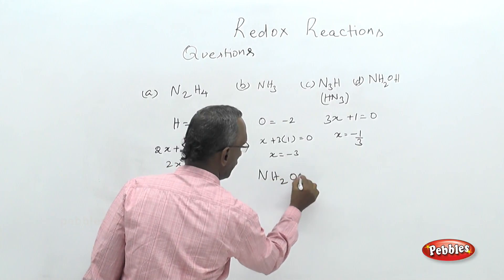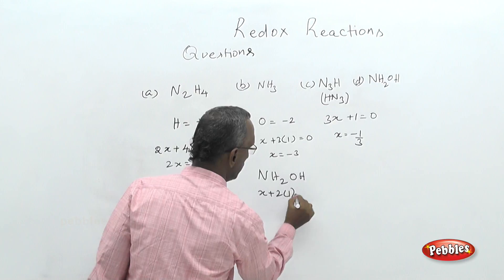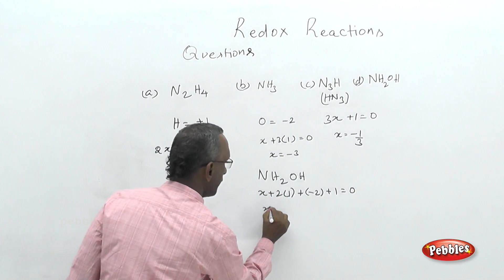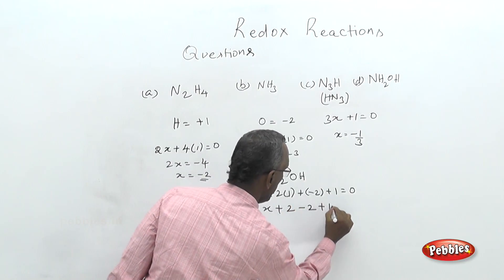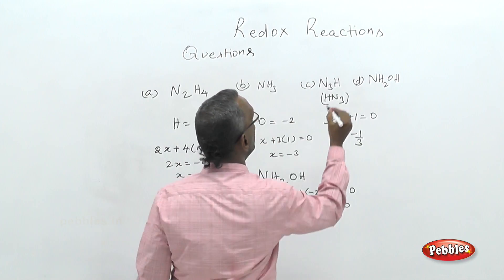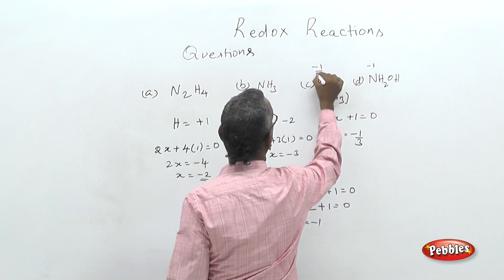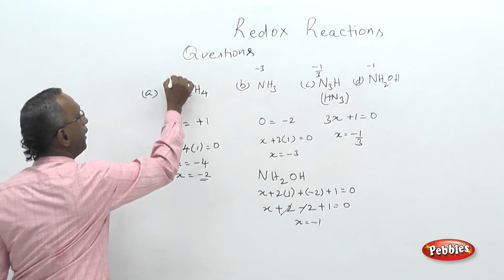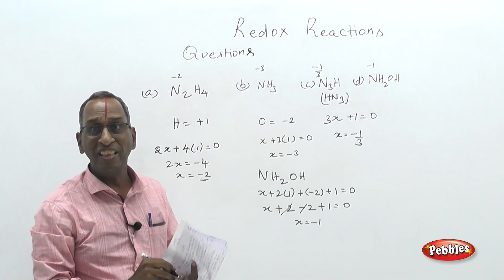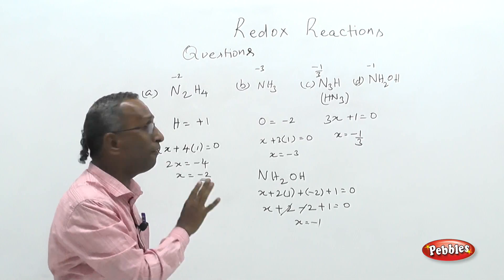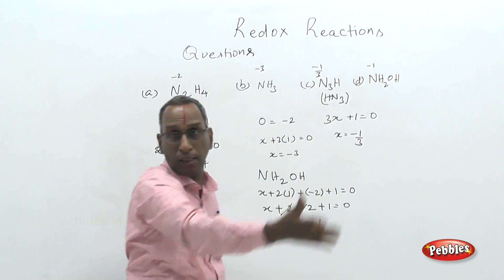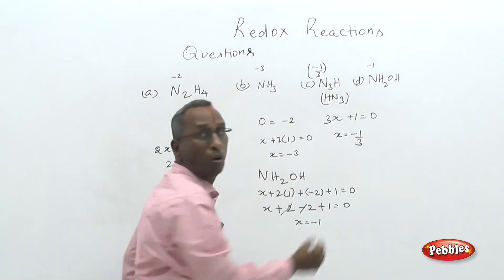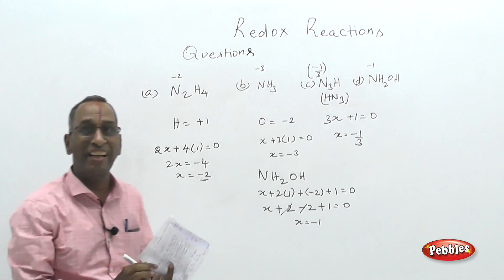For hydroxylamine (NH₂OH): x + 2(1) + (−2) + 1 = 0, which gives x + 1 = 0, so x = −1. Comparing all four: hydrazine −2, ammonia −3, hydrogen azide −1/3, hydroxylamine −1. Among negative numbers, the smallest magnitude is closest to zero and represents the highest oxidation state. Therefore, −1/3 is the highest, found in hydrogen azide (HN₃).